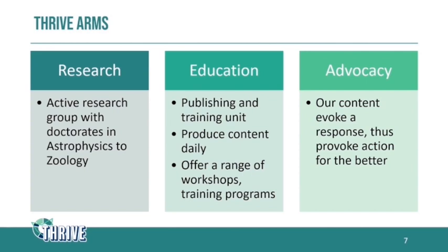Thrive Project operates through three arms: a research arm with an extensive group of experts in relevant fields; an education arm, best exemplified by our publishing and training units where we produce content on a daily basis; and advocacy — the hope is that our content evokes a response in people and provokes action for the better. We're all part of the problem and need to transition to becoming part of the solution.